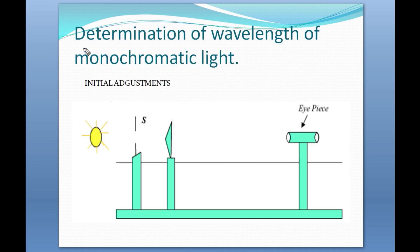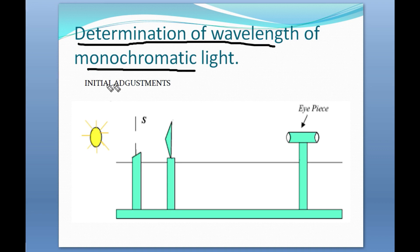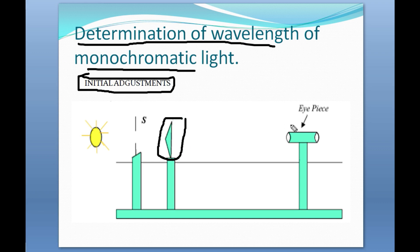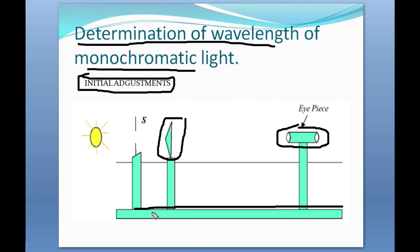Now we come to the second part of the experiment: the determination of the wavelength of monochromatic light. For this, we need some initial adjustments. S is the narrow slit, this is the biprism, and this is the micrometer eyepiece. All three components are mounted on the optical bench, and all are exactly perpendicular and at the same height.